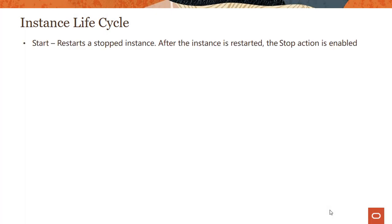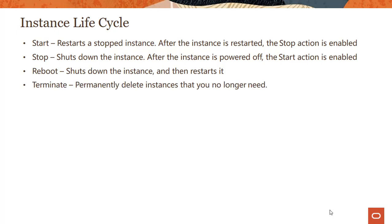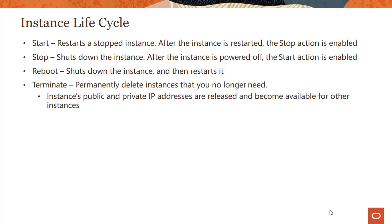It's pretty straightforward, like with any other cloud provider. Now there are a couple of things you need to know about instance lifecycle. Starting an instance — if you have stopped instances, you shut down the instance and then you can start it again. Reboot does the same thing: shuts down the instance and then restarts it, combining stop and start. Terminate is permanently deleting the instance. When you terminate an instance, the public and private IP addresses are released and become available for other instances to use.